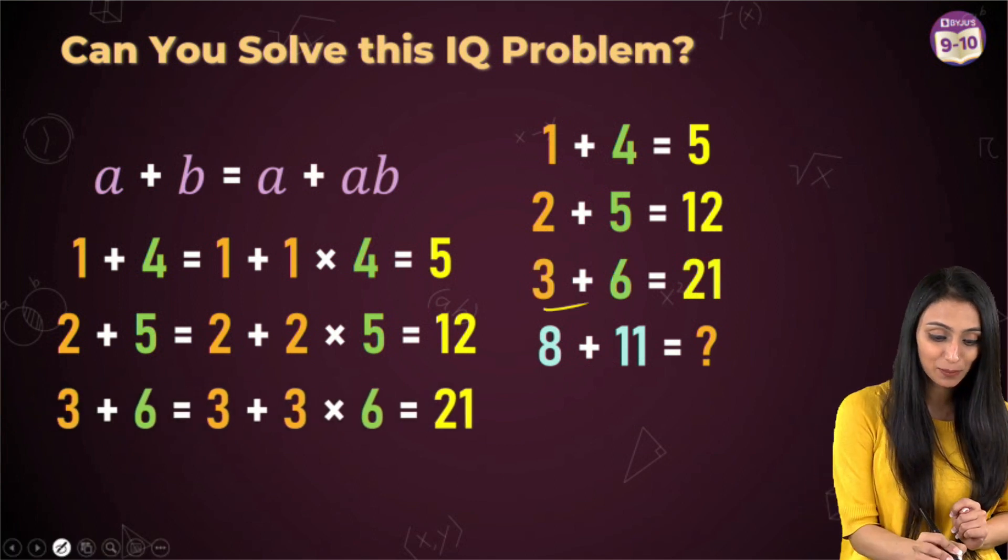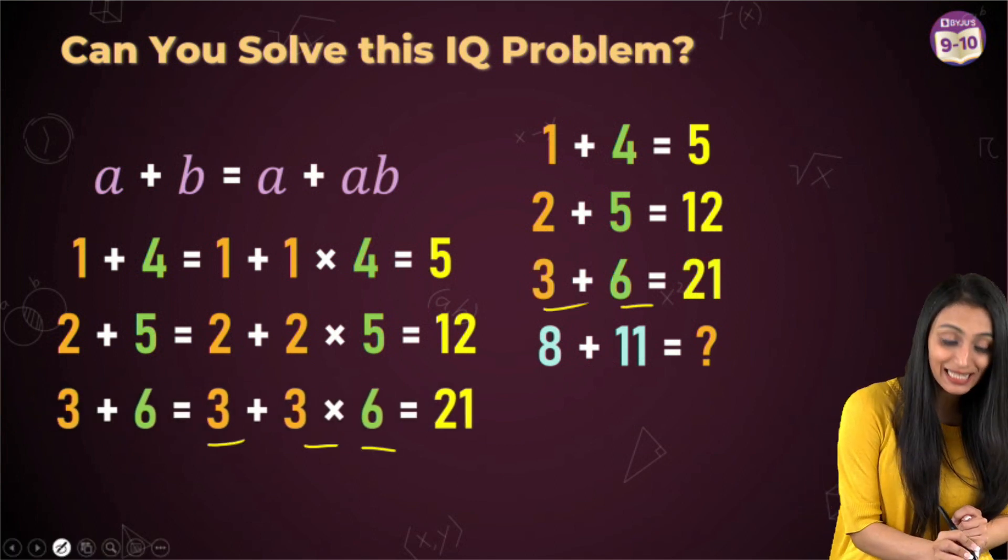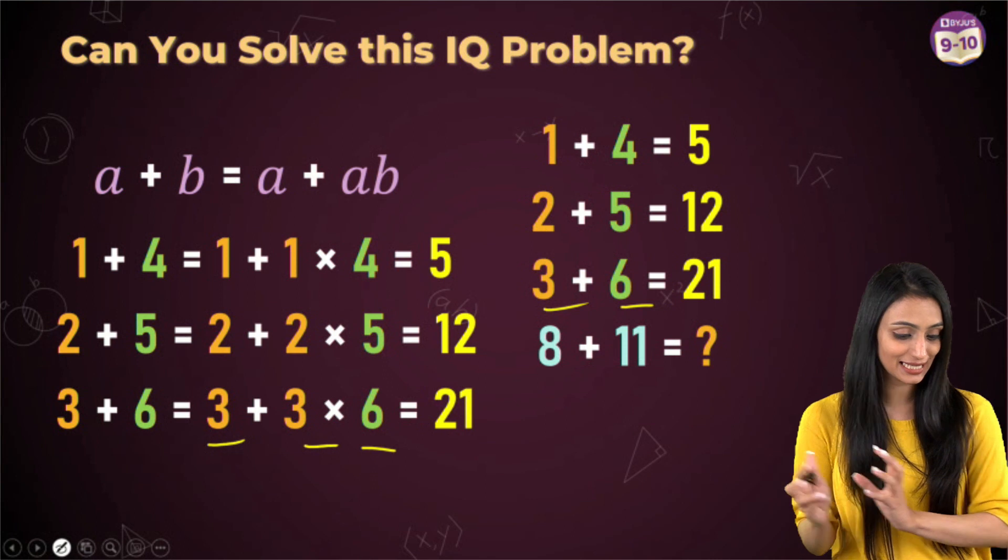Similarly for the third one, it is 3 plus 6. That means 3 plus 3 times 6, which is 3 plus 18, that's 21.